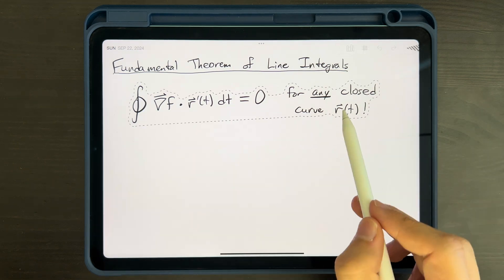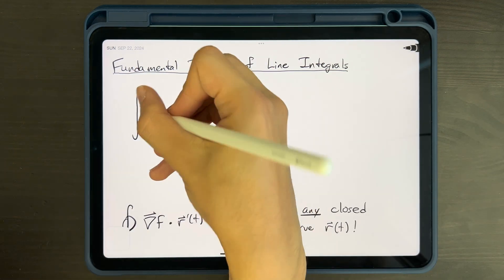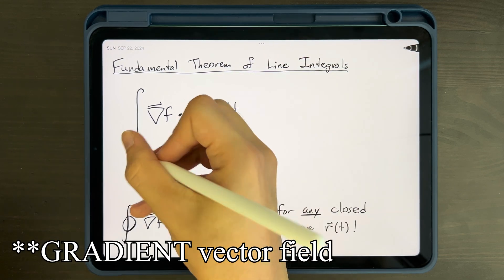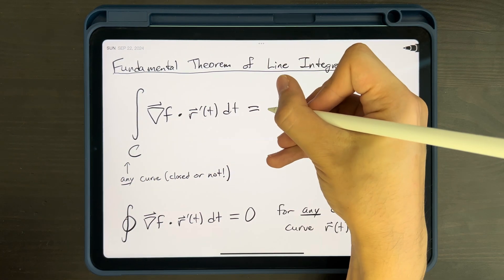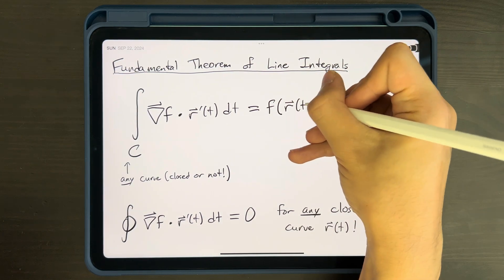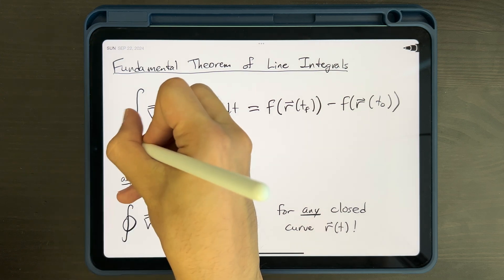The connection is even more general than this. The fundamental theorem of line integrals tells us that the line integral of a vector field over any curve, regardless of if it is closed or not, is equal to the regular function corresponding to our gradient vector field evaluated at the start and end points of our integrating curve.